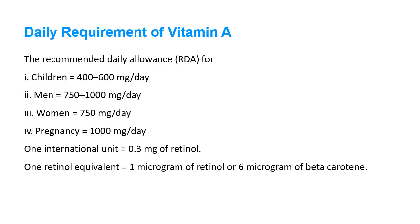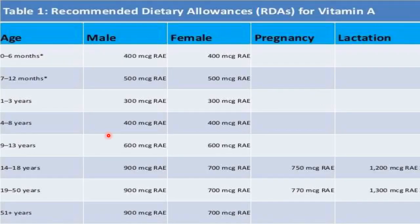Daily requirements of vitamin A: 400–600 micrograms per day for children; approximately 1000 micrograms per day for men and during pregnancy; 750 micrograms per day for women. One international unit of vitamin A equals 0.3 micrograms of retinol. One retinol equivalent equals 1 microgram of retinol, which equals 6 micrograms of beta-carotene.